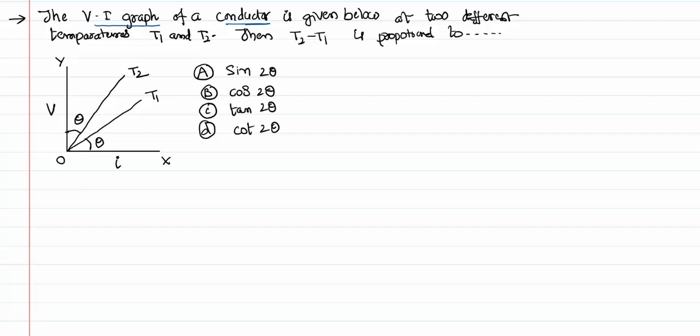This is given for a conductor at two different temperatures, one at T1 and another at T2. In that case, what's the relation between the temperature and the angle? First of all, we can write, being a V-I graph, tan θ for this graph.